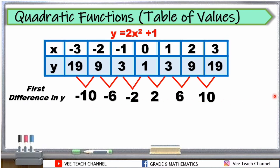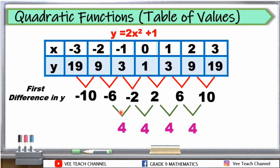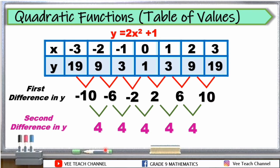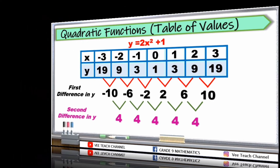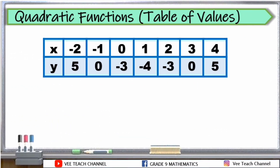Ngayon, kunin naman natin yung second difference ng y. I-minus lang natin sa bawat isa yung first difference. So, 10 minus 6 is 4. 6 minus 2 is 4. 2 minus negative 2 is 4. Negative 2 minus negative 6 is positive 4. Negative 6 minus negative 10 is positive 4. Anong napansin nyo sa ating second difference? Yes, they are all the same — they all have 4. Dito sa ating table of values, yung second difference in y has the same value, which is 4. Kaya malalaman natin na quadratic function ang table of values natin, kung same yung nakuha nating second difference in y.